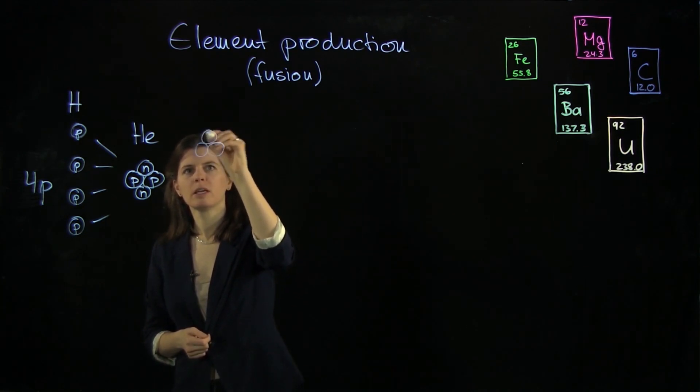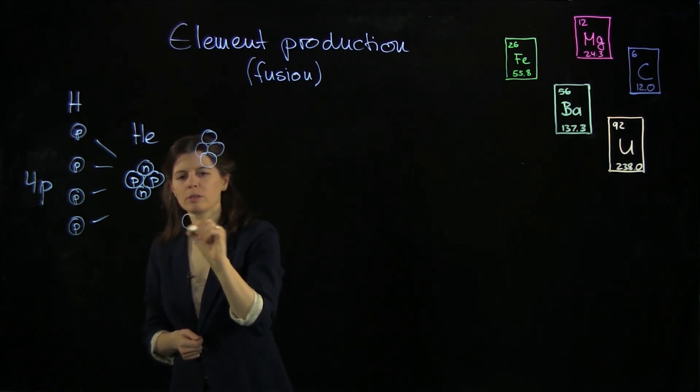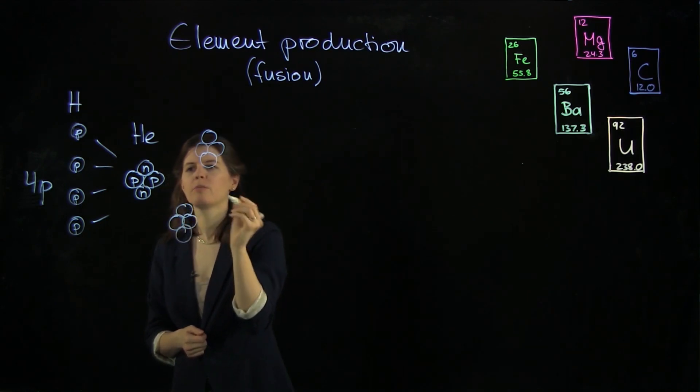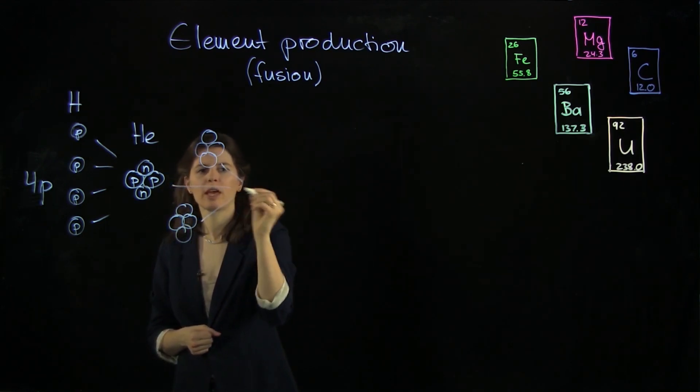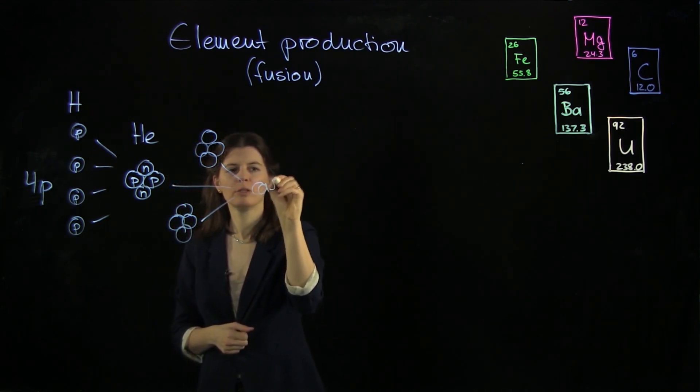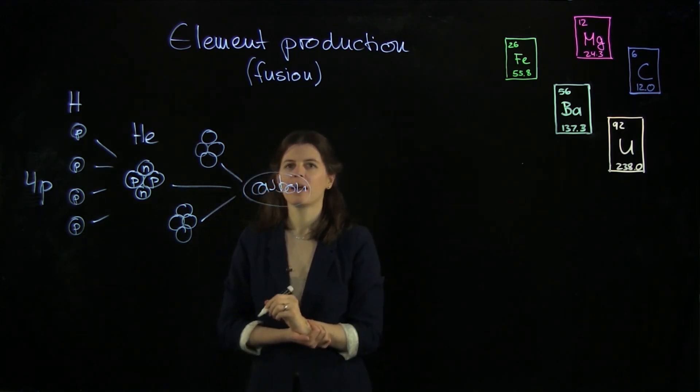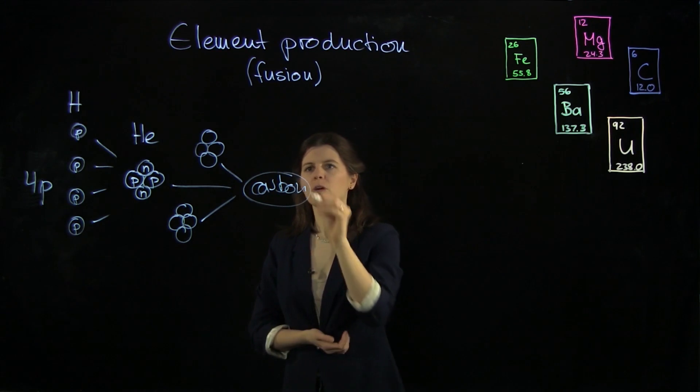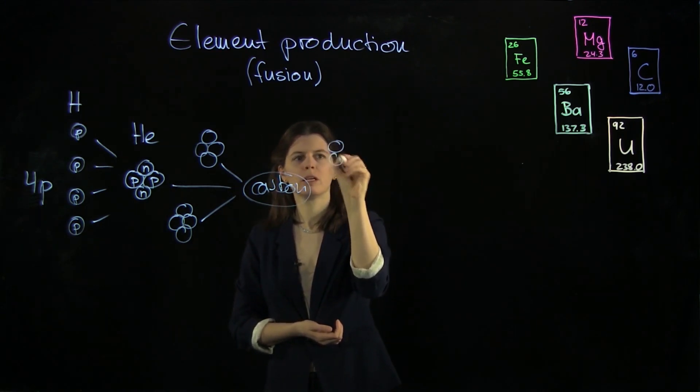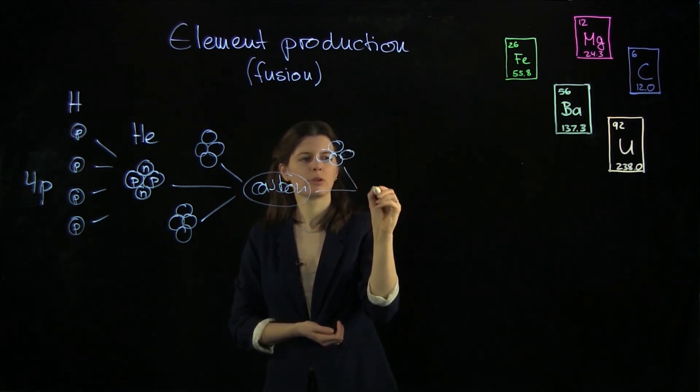Namely, if we have another helium here and another one, so we'll put all of those together, we're going to get a carbon nucleus. This is the carbon nucleus. And if we're going to add another helium to that, we're going to get oxygen.